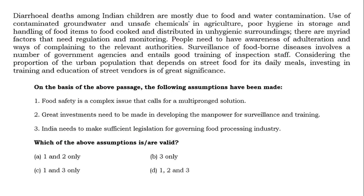Passage: Diarrheal deaths among Indian children are mostly due to food and water contamination — use of contaminated groundwater and unsafe chemicals in agriculture, poor hygiene in storage and handling of food items, food cooked and distributed in unhygienic surroundings. They are myriad factors that need regulation and monitoring. People need to have awareness of adulteration and ways of complaining to the relevant authorities. Surveillance of foodborne diseases involves a number of government agencies and entails good training of inspection staff. Considering the proportion of the urban population that depends on street food for its daily meals, investing in training and education of street vendors is of great significance.